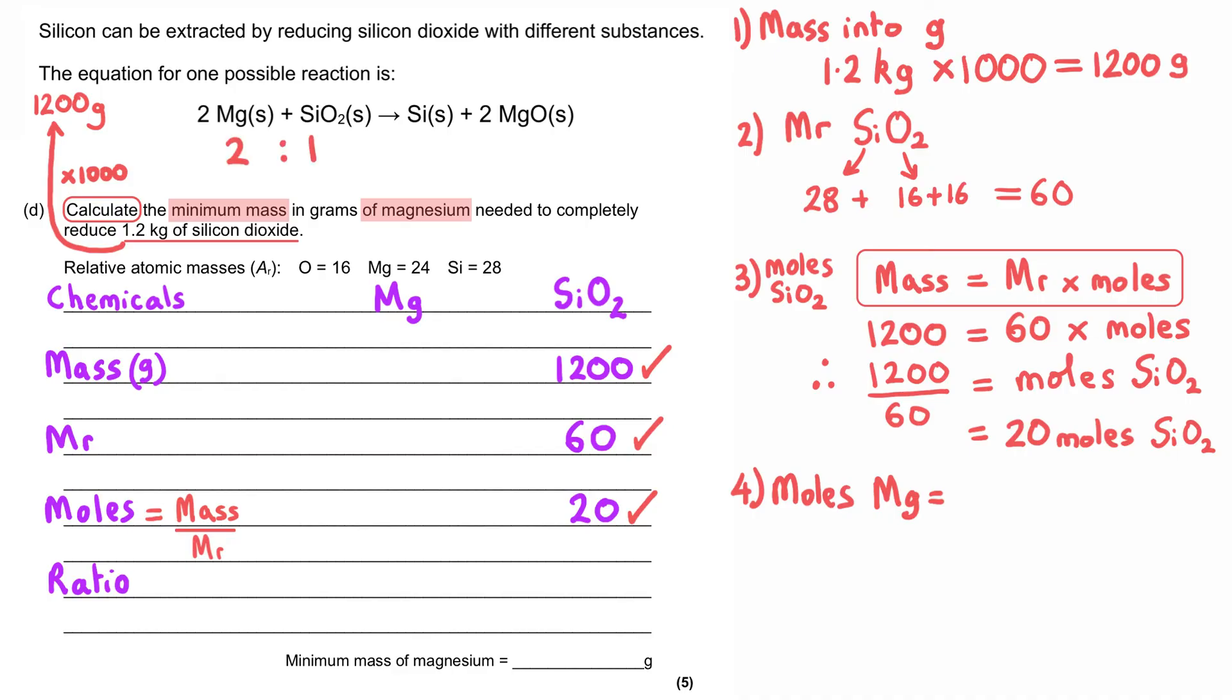Or in other words, however many moles of silicon dioxide we are using, we will need twice the number of moles for magnesium. And so what we need to do here is take the moles of silicon dioxide and multiply it by two, and this gives us 40 moles of magnesium.